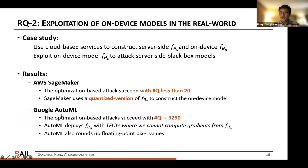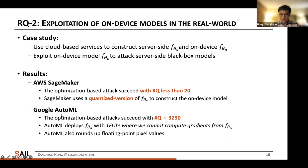Now we turn to real-world scenarios. We use cloud-based services such as Amazon SageMaker and Google AutoML to construct server-side and on-device models, and exploit the on-device model to attack the server-side model. In AWS SageMaker, we observe the worst-case vulnerability increase because they construct on-device models using 8-bit quantization. However, in Google AutoML, the vulnerability barely increases, as their TensorFlow Lite library does not allow gradient computation from the on-device model, and the query interface rounds floating-point perturbation values to 8-bit integers.